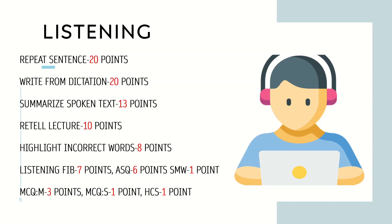Highlight incorrect words is the second-to-last module of listening, contributing 9 points in reading and 8 points in listening. Listening fill in the blanks contributes 7 points in listening and 7 points in writing. Answer short question is the last module of speaking — it contributes 2 points in speaking and 6 points in listening, for a total of 8 points.